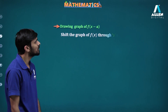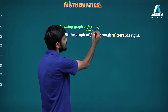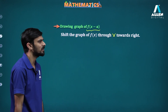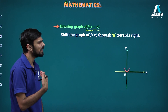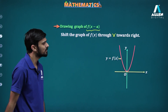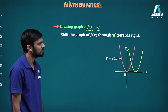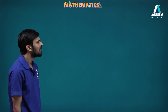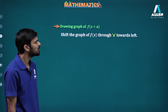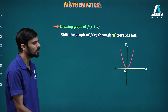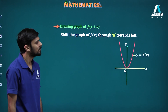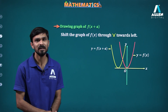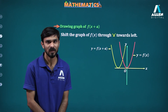Another situation is f(x minus a) — the origin being shifted to (a, 0), so the graph will shift a units rightwards. And for f(x plus a), it will shift a unit towards the left. So now we understand the translation variation.